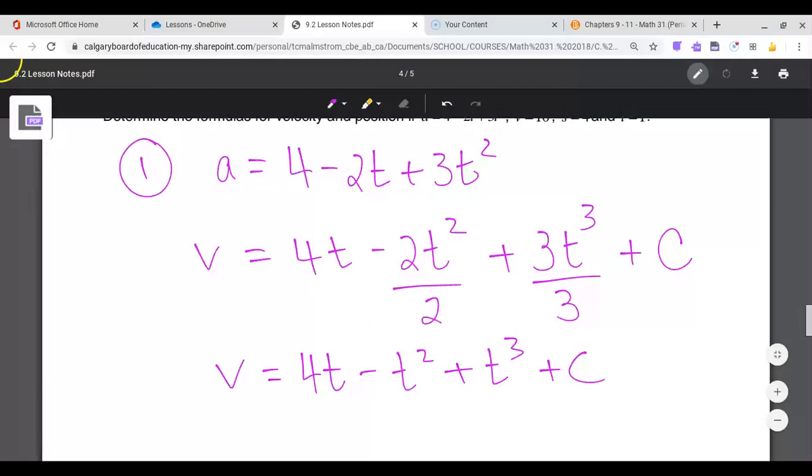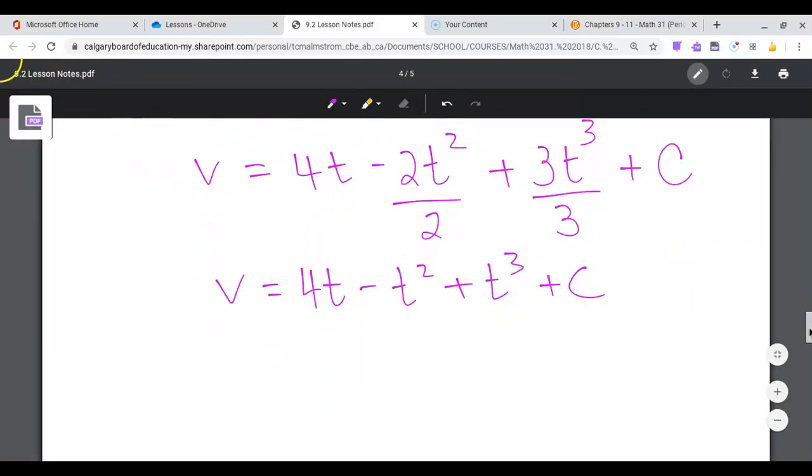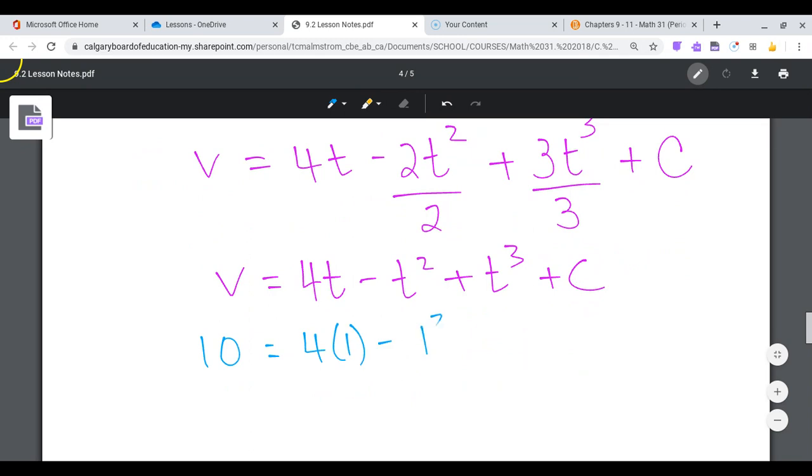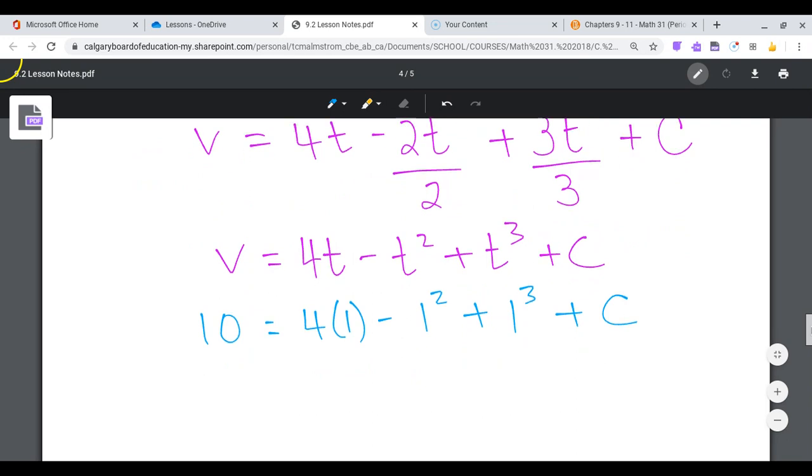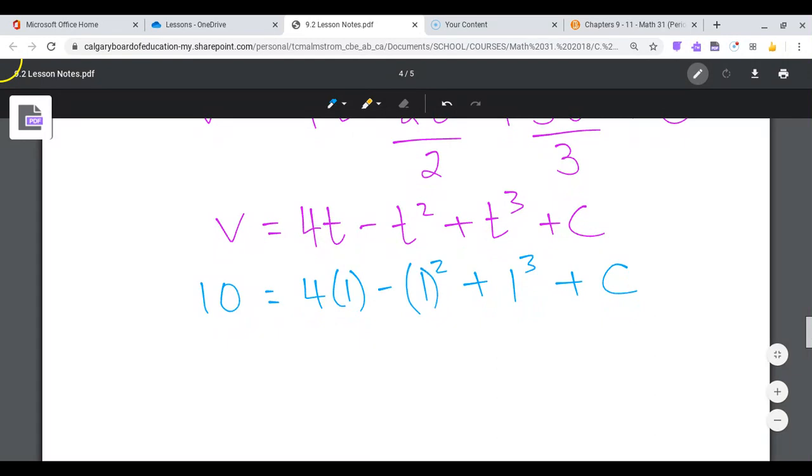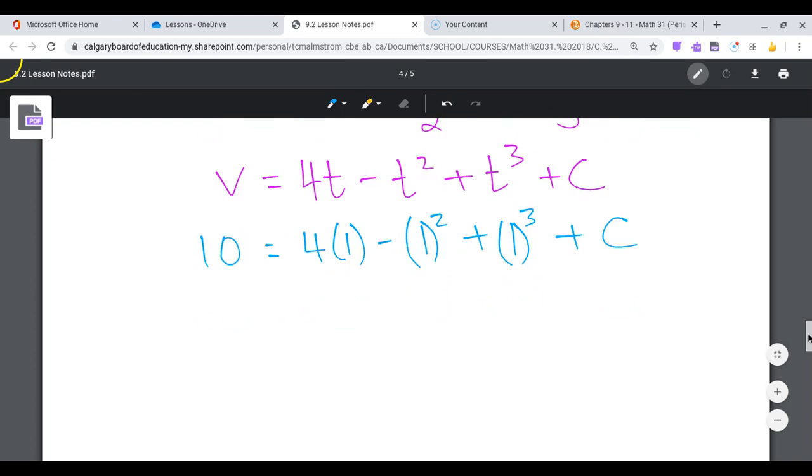And what do I know? I know that v is equal to 10 at time 1. So 4 times 1 minus 1 squared plus 1 cubed plus c. So negative 1 plus 1 is going to cancel those out. Remember this is in brackets like this, so it is a subtract 1 plus 1, and so we get, therefore, c is equal to 10 minus 4 is 6.